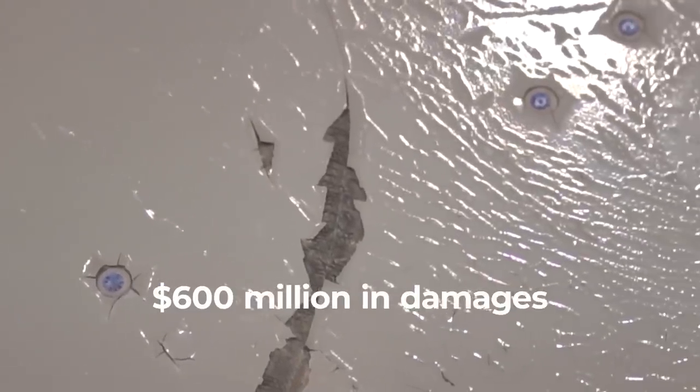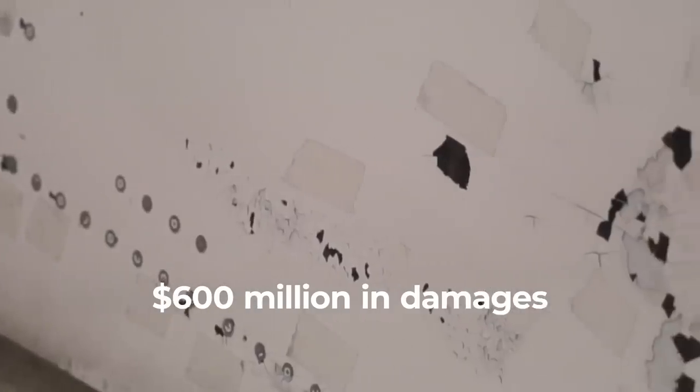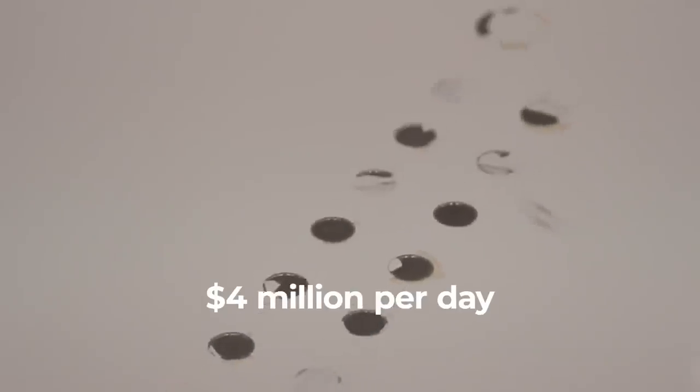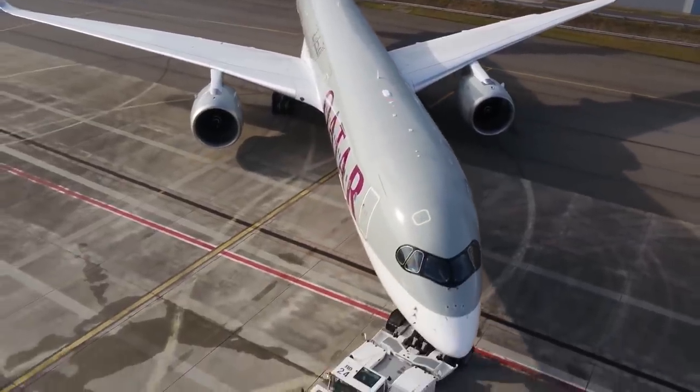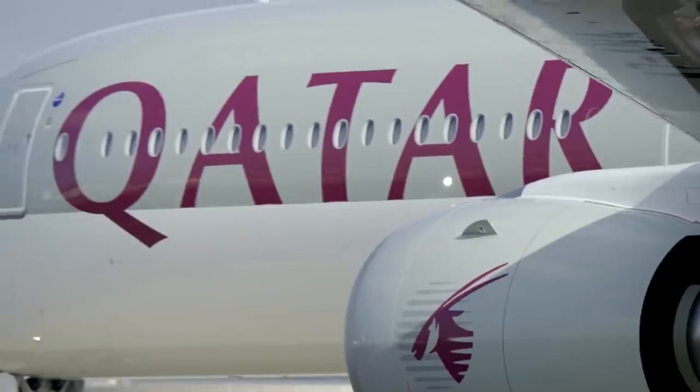Earlier this month, it was revealed that the airline was seeking $600 million in damages from Airbus through the proceedings. In addition, the airline wants an extra $4 million for each day a plane remains grounded. This would add up to the 2018 list price of an A350-900 every 80 days.